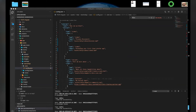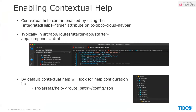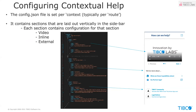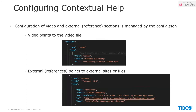Once we've got the right location, we read the config.json, which tells the help bar what to show. The config.json has three main sections that map to the three main parts of the help bar: a section for video typically at the top, a section for inline help, and a section for external references.